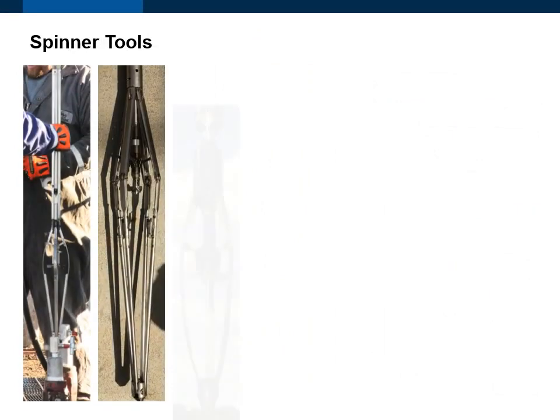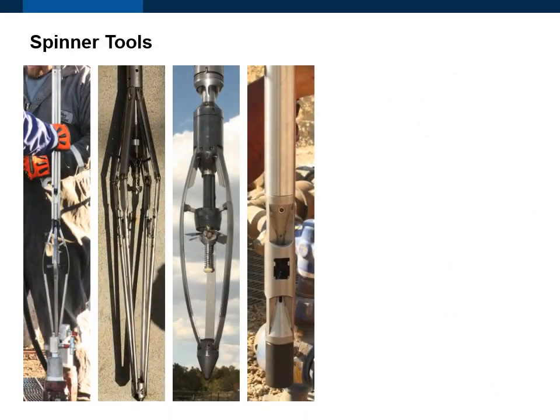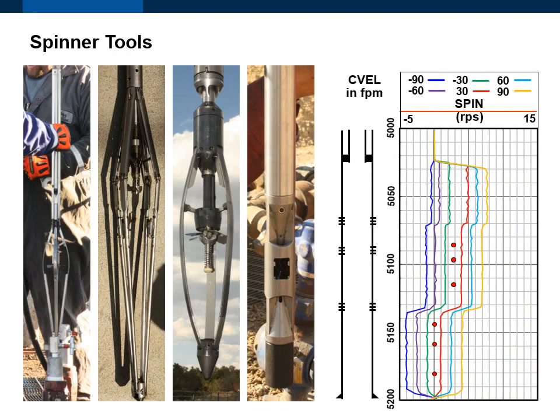Spinner tools use a blade or turbine spinner element to measure the velocity of the fluid intersecting the spinner element. By understanding the fluid distribution across the wellbore, this velocity is used to calculate the average velocity of the flow stream, which in turn is used to calculate the flow rate. Spinner tools only respond to what is happening inside the innermost casing string, so they can only determine where fluid is entering or exiting the innermost casing string. Spinner tools are the most commonly used tool to determine downhole flow rates.